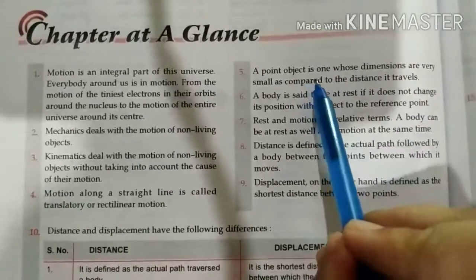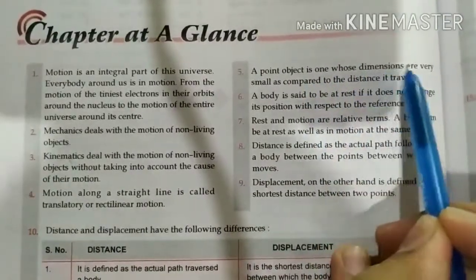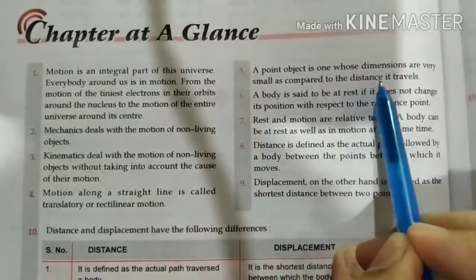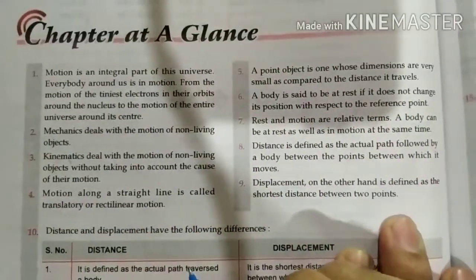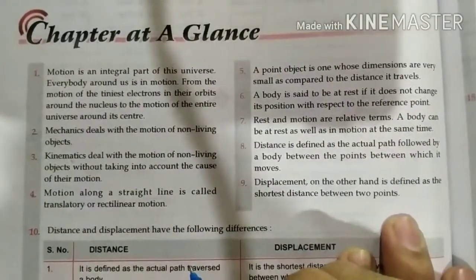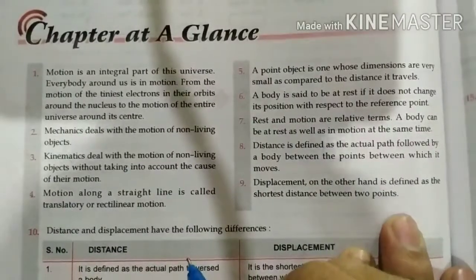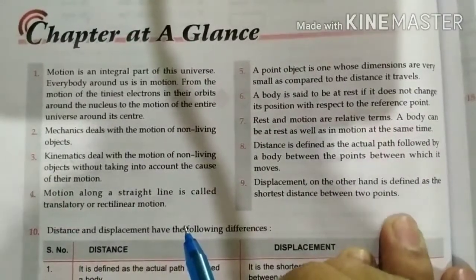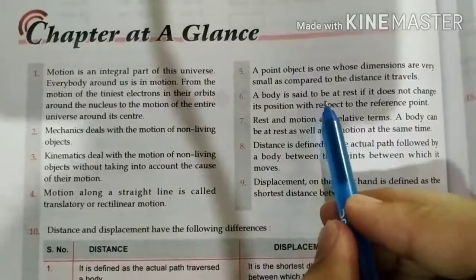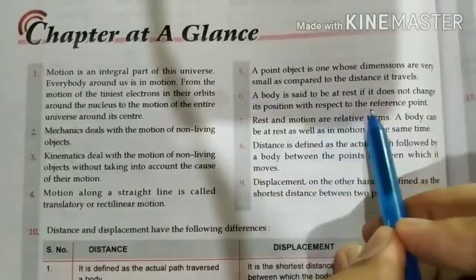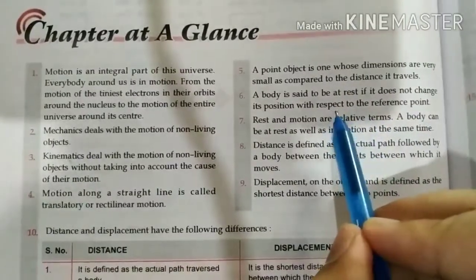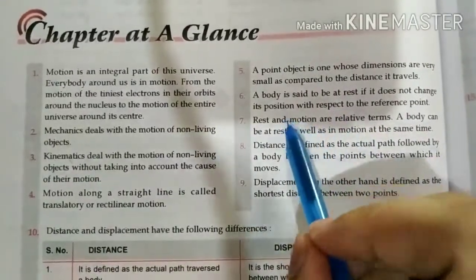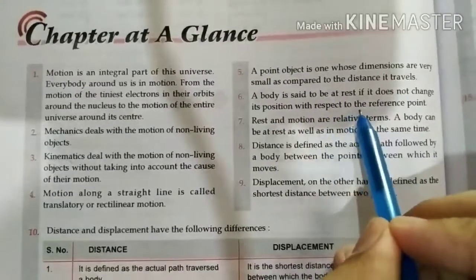If a point object is one whose dimensions are very small as compared to distance traveled. Point object, what is the point object? The reference point.